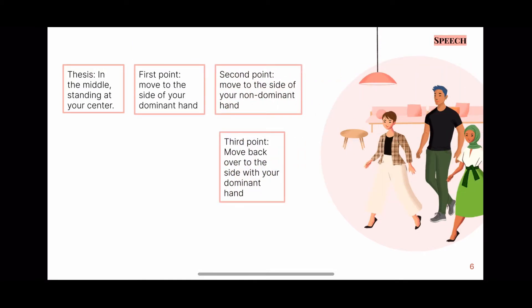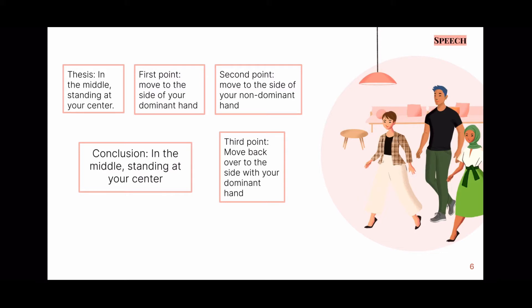For your first, second, and third points, you need to move side to side on the stage. This gives the audience a visual transition between idea transitions, which helps keep them engaged and motivated with your presentation. Lastly, for the conclusion, make sure you go back to your power pose for that one as well.